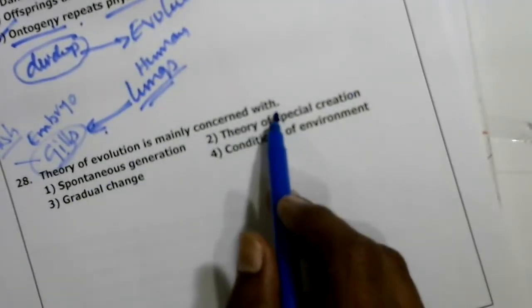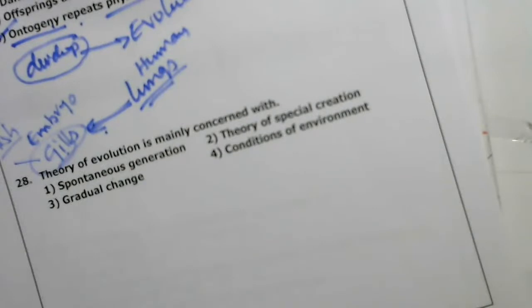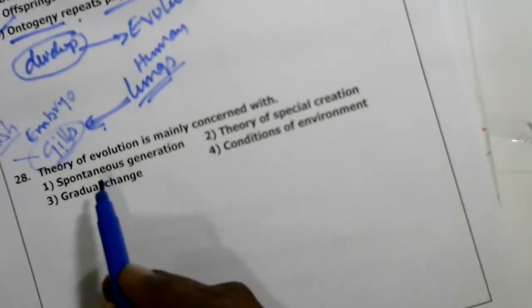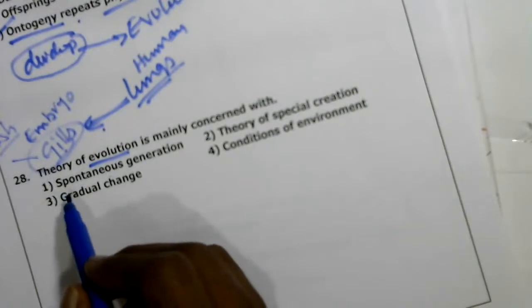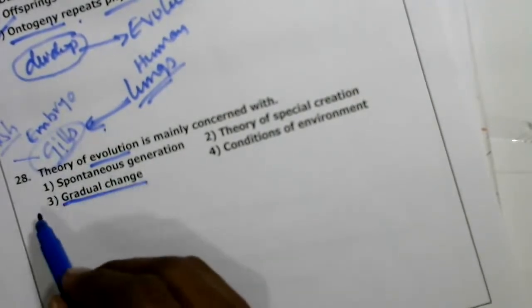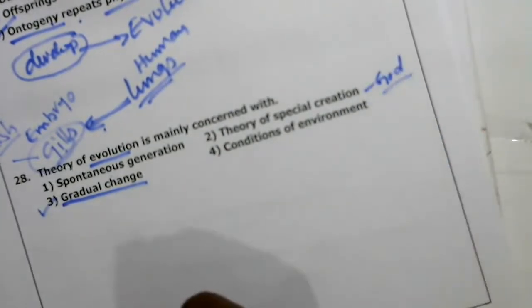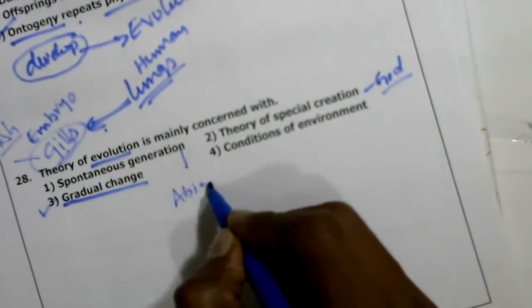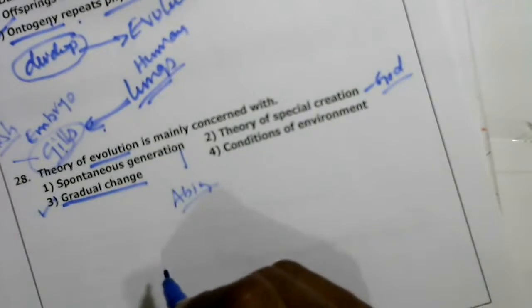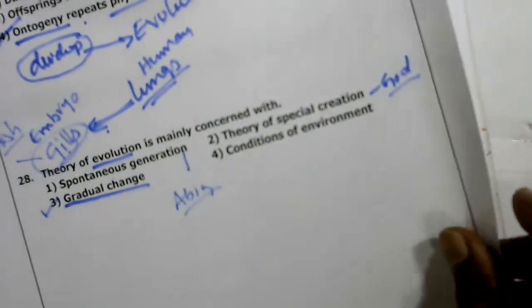Twenty-eighth question: theory of evolution is mainly concerned with — spontaneous generation is proposed by Aristotle (also called abiogenesis), special creation says life is created by God, inheritance of acquired characters is by Lamarck, and use-and-disuse is also Lamarck's. Darwin's theory of evolution is mainly concerned with gradual changes over long periods of time — third option is correct.